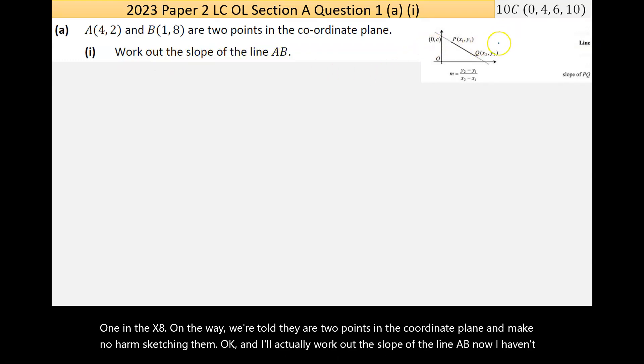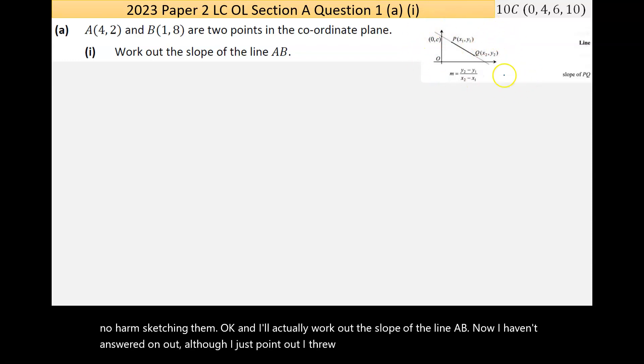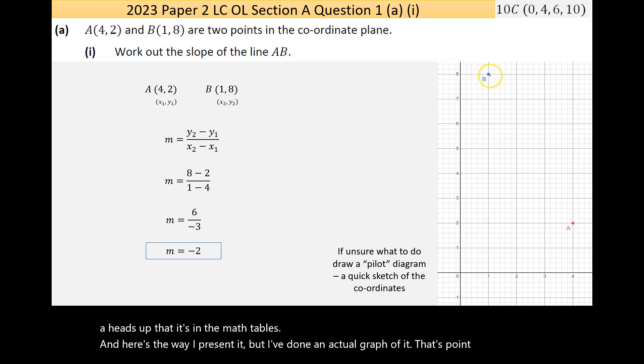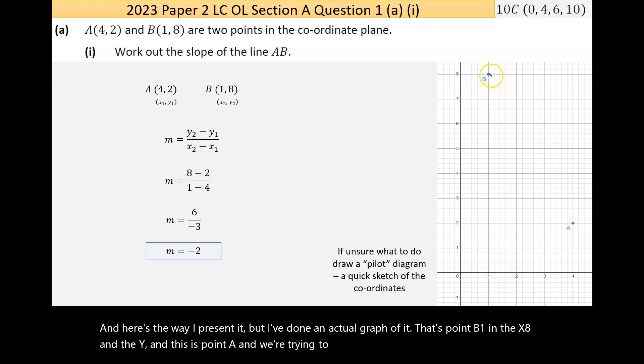I have an answer done out, although I just want to point out it's in the maths tables. Here's the way I would present it - I've done an actual graph of it. That's point B, 1 on the x and 8 on the y, and this is point A. We're trying to find the slope between those points, or a measure of how y changes as x increases.